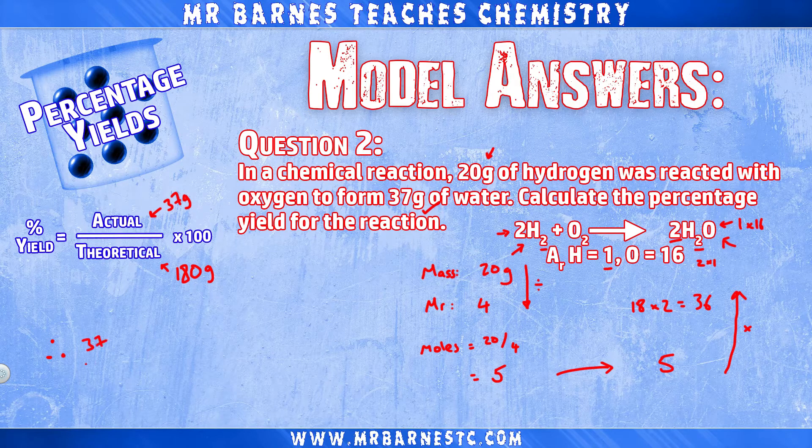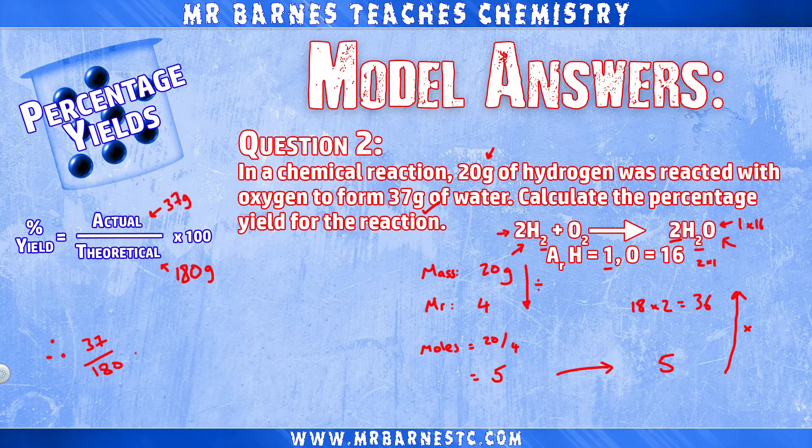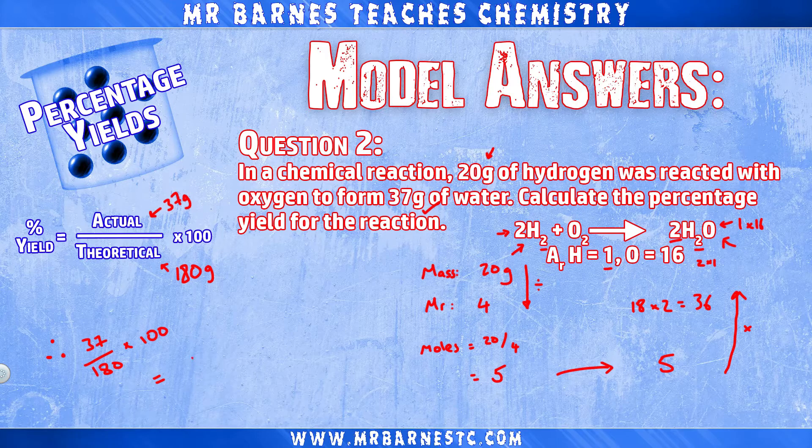I can then take this and add it into my percentage yield equation. So 37, my actual mass, divided by 180, my theoretical yield, multiplied by 100, gives me a final percentage yield of 20.6% to one decimal place.